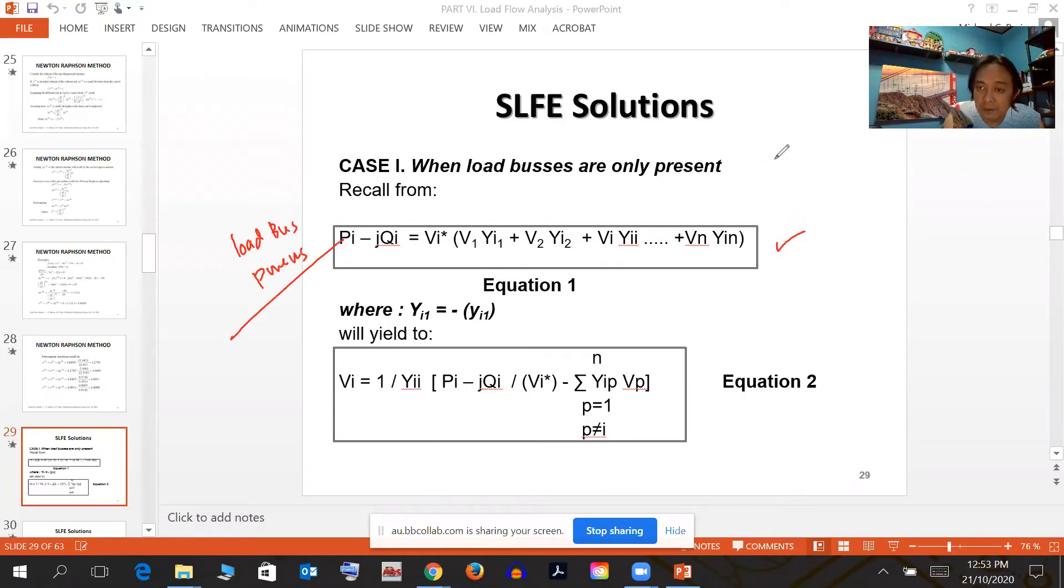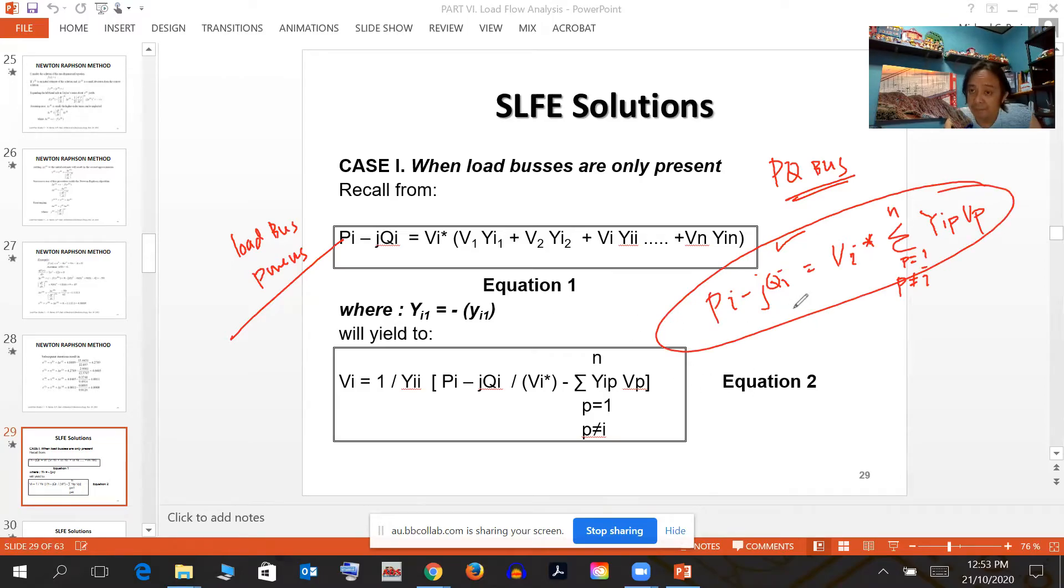Case number one: all buses are PQ bus. We discussed what a PQ bus is earlier. We have the load bus powers with the equation we had earlier: V_i conjugate, with the summation where p is not equal to i, considering p will start at 1, Y_ip V_p, equal to P_i minus jQ_i.